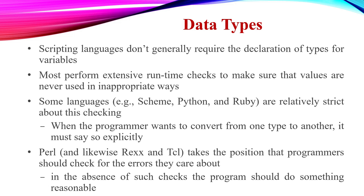When the programmer wants to convert from one type to another, they must say so explicitly. In Perl and Tcl, the programmer and the interpreter check for errors. In the absence of such a check, the programmer should do something reasonable.